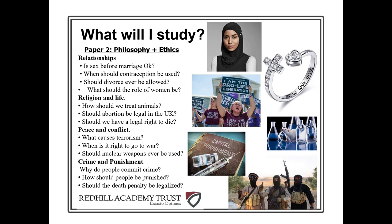We're then going to have a look at crime. Why do people commit crime? If they do commit crime, how should they be punished? And in particular, should we bring back the death penalty? Or actually, should we be building a legal system where we look to reform people rather than just punish them?